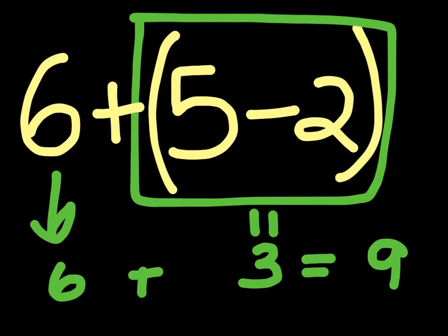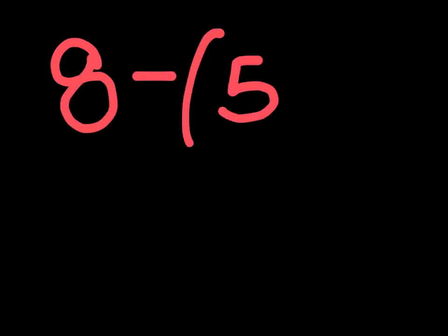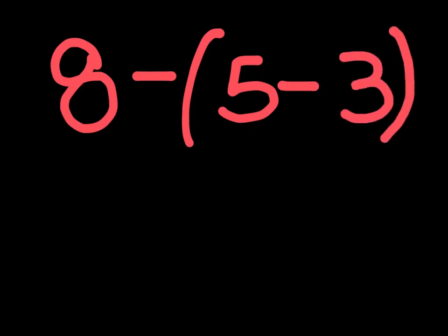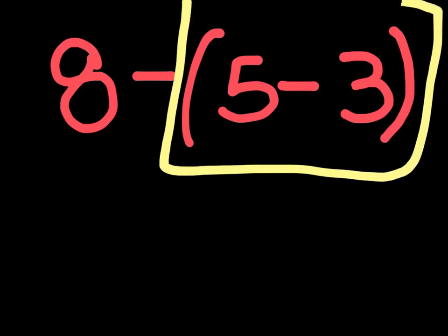So let's try another example. Now, let's take the example of 8 minus 5 minus 3. So we know that the first thing we need to do is do whatever is inside of the parentheses. So the answer we get from what's inside the parentheses is 2.